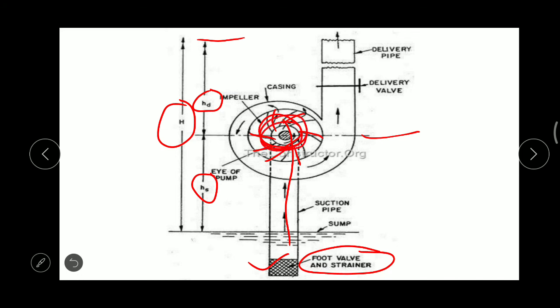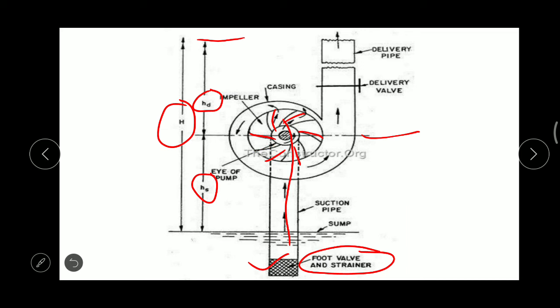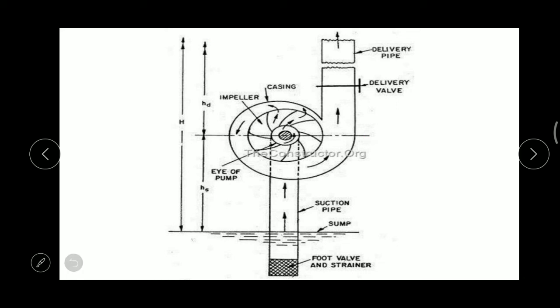As the impeller rotates, the water experiences centrifugal force directed away from the center. Due to this centrifugal force, the water rotates inside the casing and is forced toward the only available exit — the discharge or delivery pipe — where it exits and is sent to the required location. These are the heads involved in the centrifugal pump.